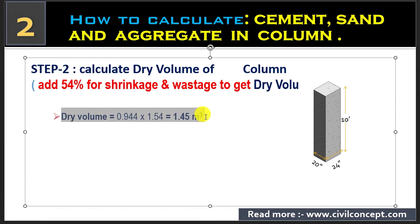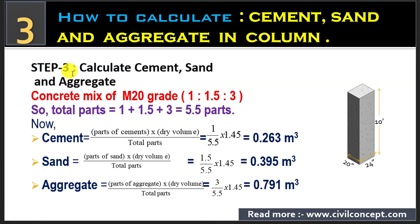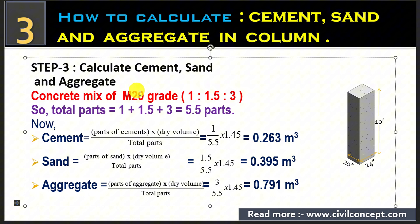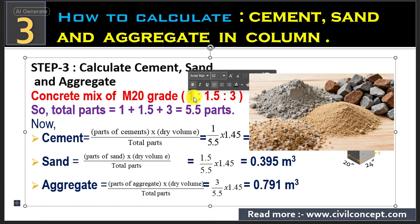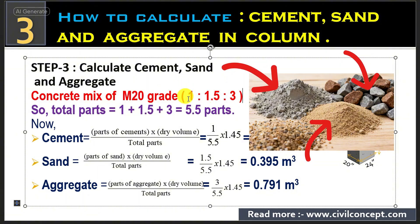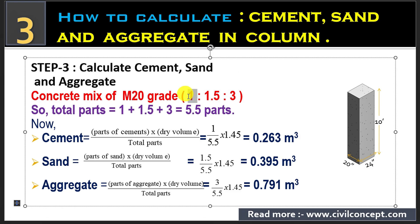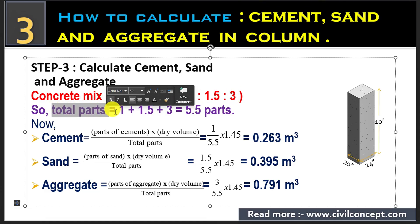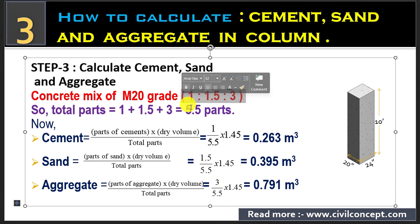In step 3, we will calculate cement, sand, and aggregate separately. For this, we assume M20 grade of concrete. The ingredient ratio for M20 grade is 1 is to 1.5 is to 3 — where 1 is parts of cement, 1.5 is parts of sand, and 3 is parts of aggregate. Similarly, if we assume M15 grade of concrete, the mix ratio would be 1 is to 2 is to 4. The total parts for M20 is 1 plus 1.5 plus 3, which equals 5.5 parts.